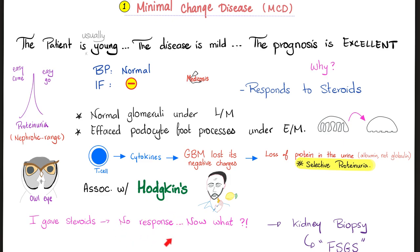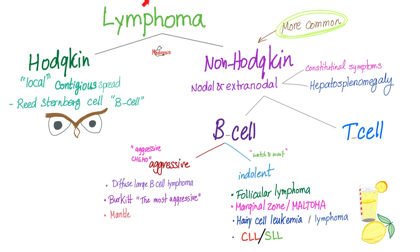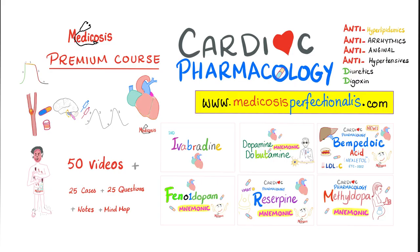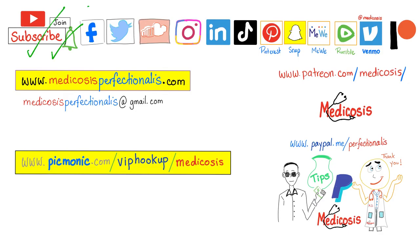If the patient does not respond to steroids, you need a kidney biopsy — do it again, because this could be focal segmental glomerulosclerosis that you missed. In my hematology playlist, we talked about lymphomas — you know they are Hodgkin's or non-Hodgkin's. If you want to learn more about kidney pharmacology, check out my cardiac pharmacology course at metacosisperfectionalist.com. Thank you for watching. Please subscribe, hit the bell, and click the join button. You can support me here. Go to my website to download my courses.